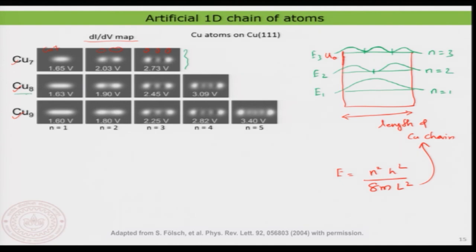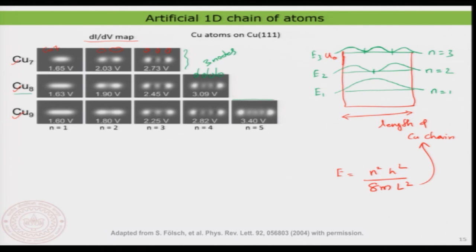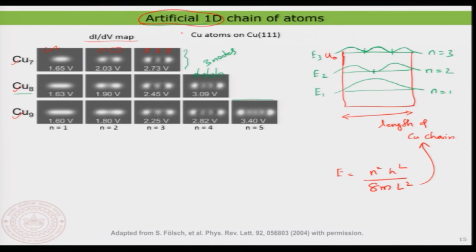For the copper-8 chain, you can go a little bit higher and see four lobes, which is what you expect for n=4 — three nodes. You can take longer chains and see these nice different electron densities as expected in a fundamental quantum mechanical problem, and you can see it in real space. This was never possible before because you also have to create artificial atoms — and without scanning tunneling microscopy to manipulate atoms, you could not see something like this.